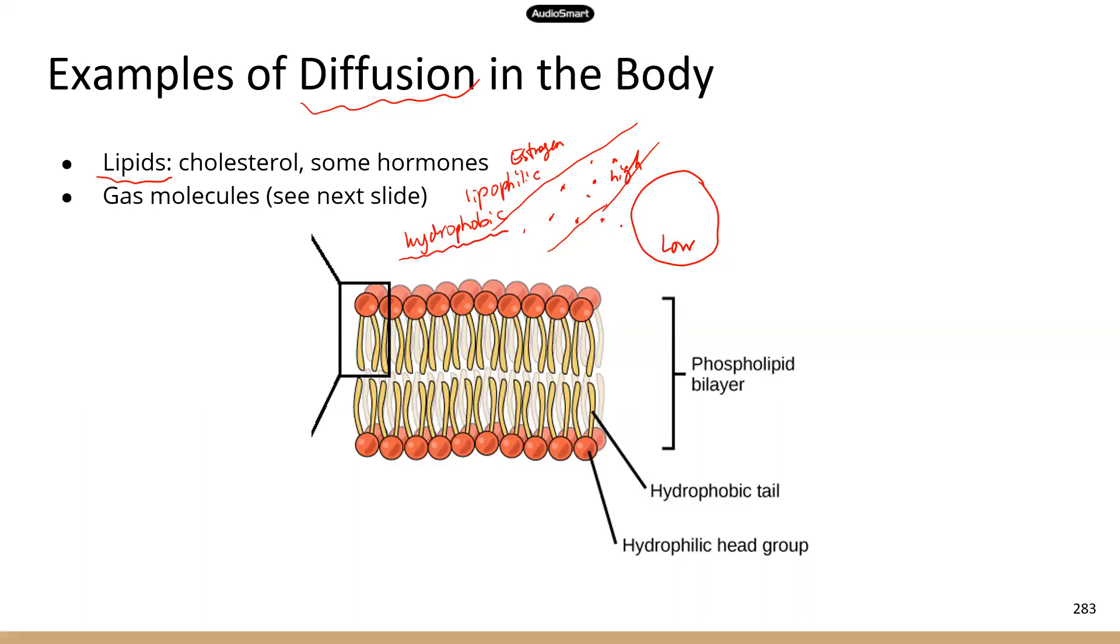They will just move freely into the interstitial fluid, the space between the cell and the blood vessel, and then they diffuse into the cell. So that's a good example of simple diffusion. Now, I just want to remind everyone one important thing.